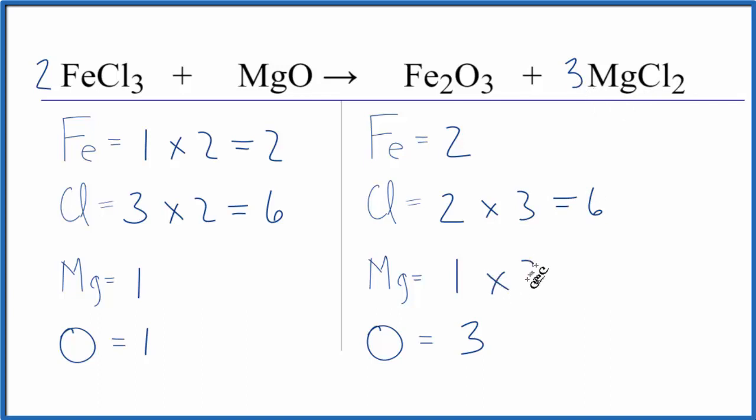One times three, now we have three magnesium atoms. Might as well do the magnesium. We could put a three as our coefficient. We have one times three. Now the magnesium atoms are balanced.